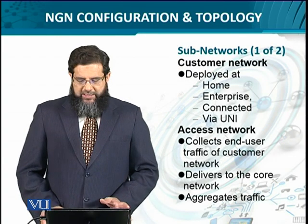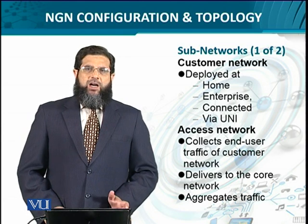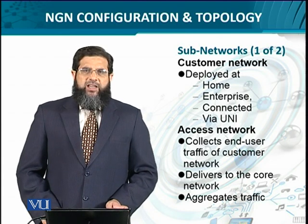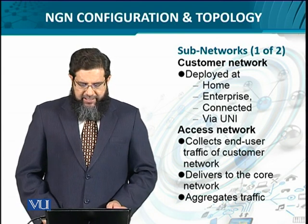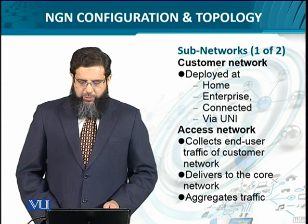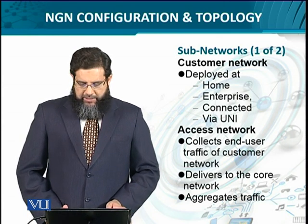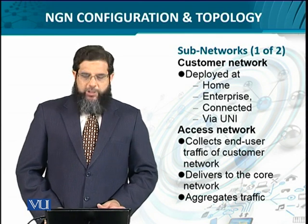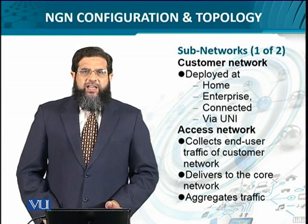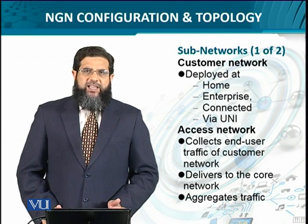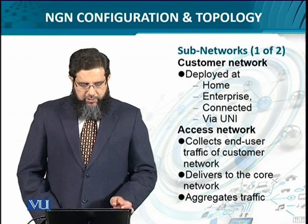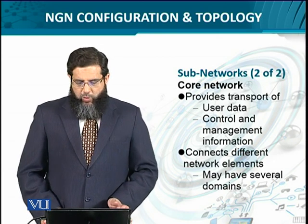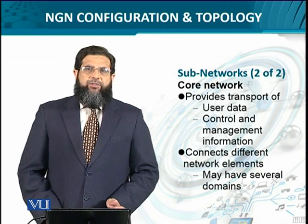Now let's look at the subnets formed in the customer network, the access network, and the core network. The customer network is essentially a home or enterprise network connected to user equipment via the user-to-network interface. The access network carries end user traffic towards the core network — it is a transit network that aggregates user equipment traffic and sends it to the core side. The core network is where the actual data traffic porting is done.